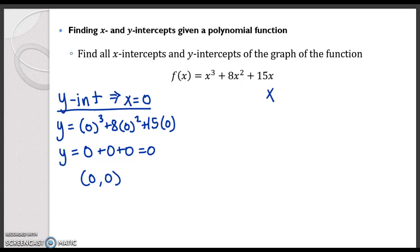For the x-intercept, what am I gonna do? Well, let's let y equal 0. So I end up getting 0 equals x cubed plus 8x squared plus 15x. Now from here you can't really solve this unless we factor.